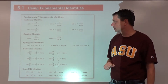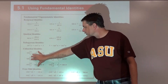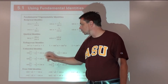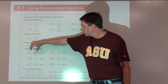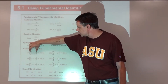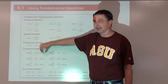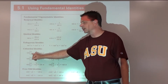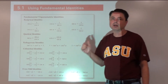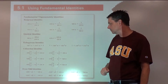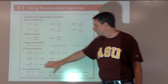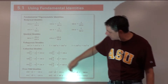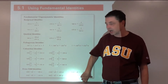Co-function identities: co-functions like sine and cosine of complementary angles — pi over two minus u and u — are equal. The key is that we're talking about angles that are complements. Then odd/even identities: sine, tangent, and their reciprocals are odd functions.